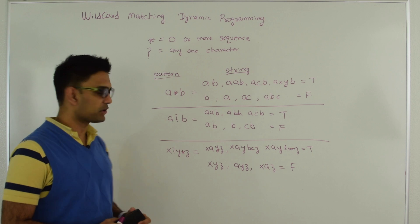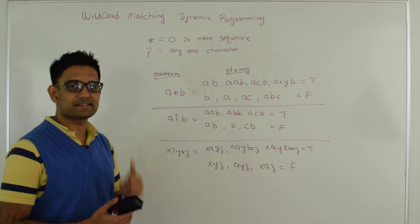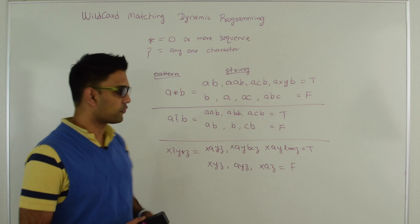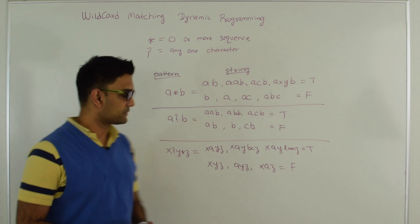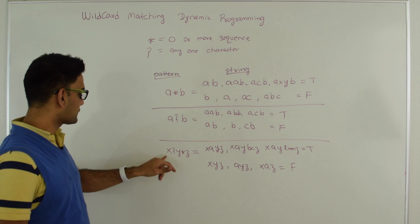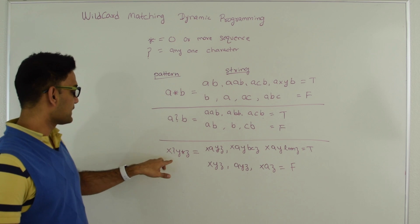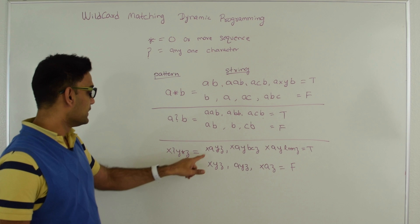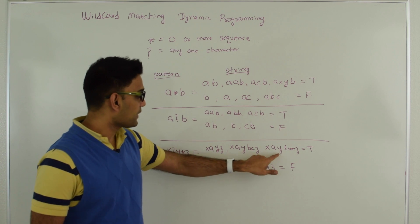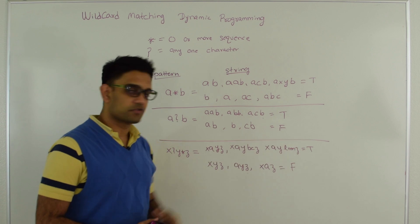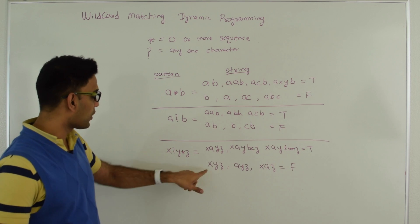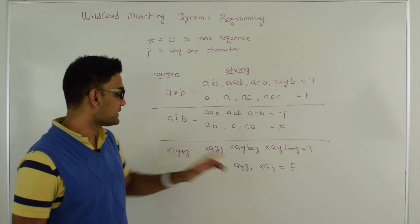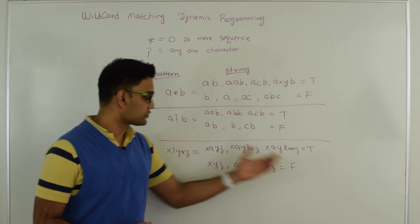Let's take another example: A?B. There should be exactly one but any character between A and B. So ABₐB, BAC B — all should be true, but ABB and CB should all be false. For the last example X?Y*Z: there can be any one character between X and Y, and then zero or more characters between Y and Z. So XAYZ and XAYLNNZ are fine. But XYZ is not fine because you need exactly one character between X and Y. AYZ and XAZ are also not fine — they should all return false.